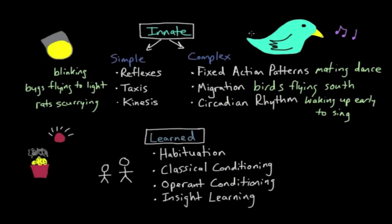And so these are the basic types of learned behaviors, and these are the basic types of innate behaviors. So to summarize, when it comes to simple innate behaviors, think of a spotlight. When it comes to complex innate behaviors, think of a bird. And finally, when it comes to learned behaviors, learn not to burn your popcorn.